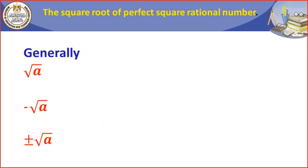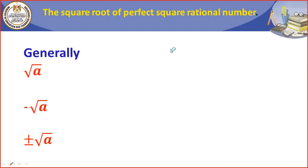Today we will talk about a very important lesson. The title is: The Square Root of a Perfect Square Rational Number. The square root of the perfect square rational number A is the number whose square equals A. For example, if I have a number like 6 and I want the square root of this number, it means 6 times 6 — repeated multiplication — which equals 36.